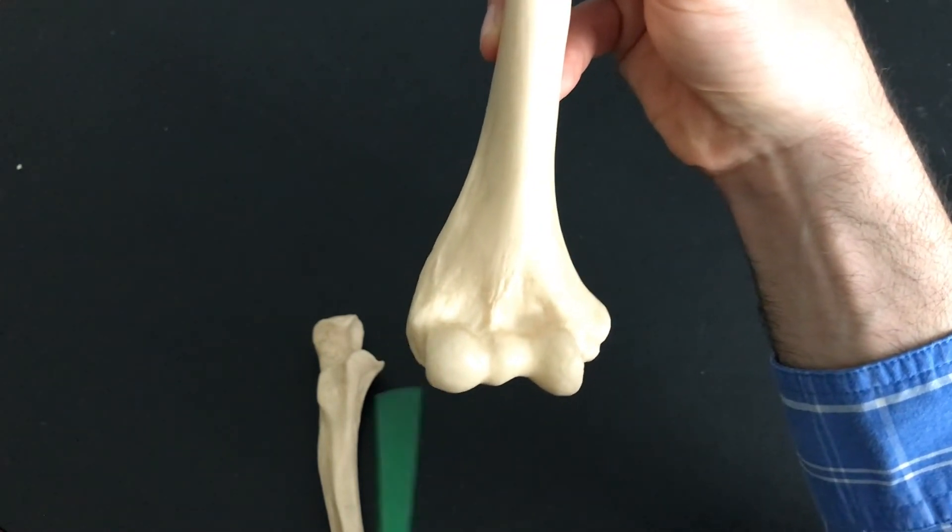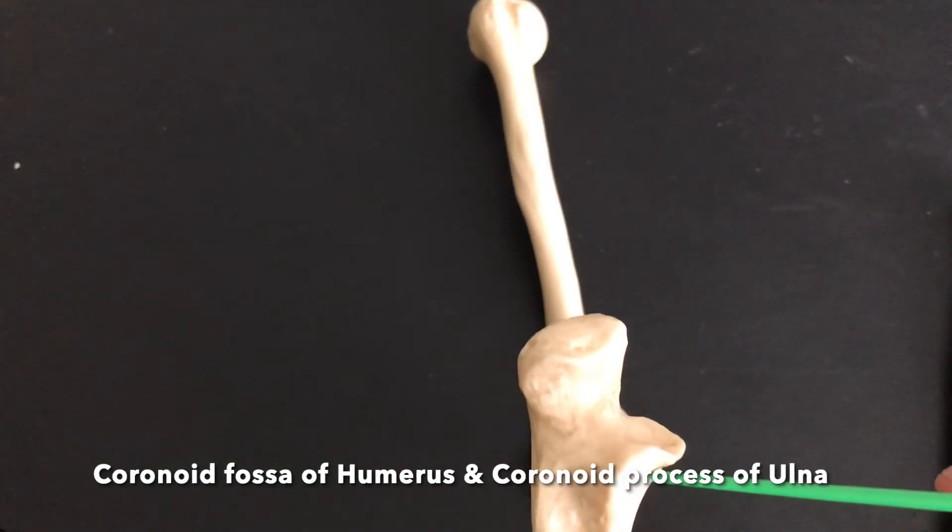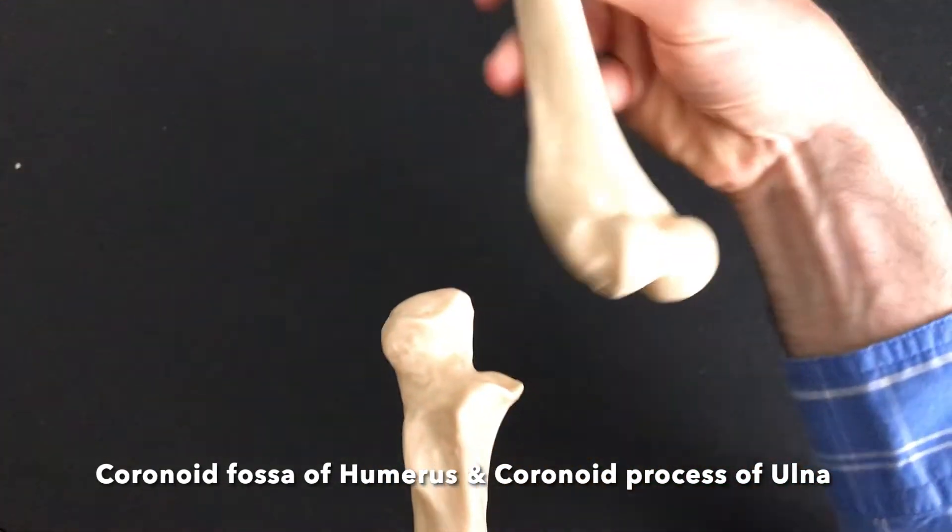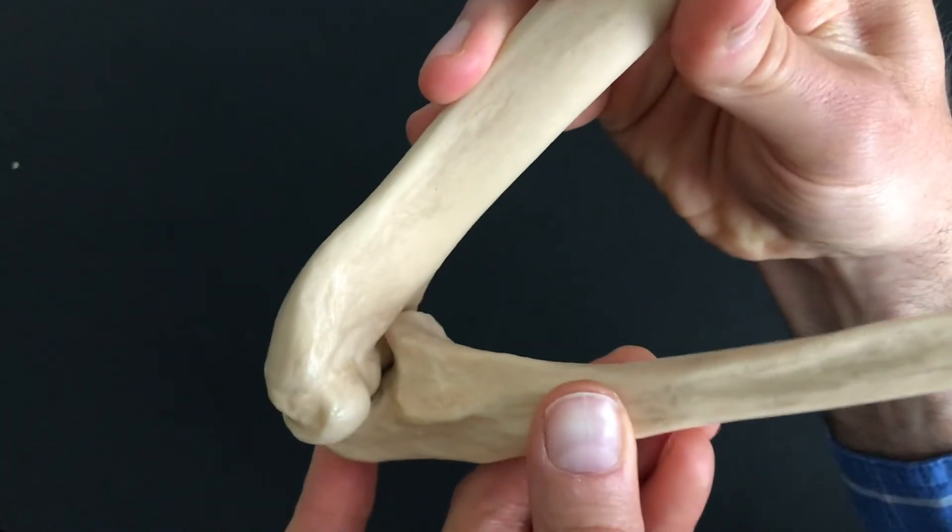The coronoid fossa is right where the coronoid process of the ulna is going to actually fit in when you bend your elbow all the way up.